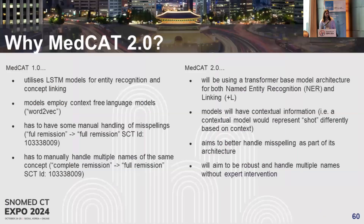So why do we want to go to MedCAT 2.0 if MedCAT 1.0 is so successful? MedCAT 1.0 uses LSTM models for entity recognition and concept linking, and it starts off with a word2vec language model which came out in about 2013. It has to have some manual handling of misspellings — if you have a misspelling of 'full remission' we have to handle it to ensure the correct full spelling. We also have to manually handle multiple names of the same concept, so if you say 'complete remission' instead of 'full remission', we have to manually account for that.